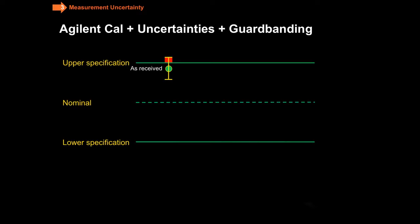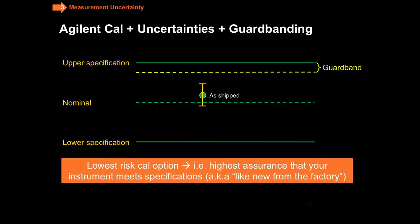Some of our customers tell us that they cannot afford risk. And so what we then do with guard banding is we take that same expanded measurement uncertainty and then we establish on the yellow dotted line a tighter acceptance limit. Then we readjust and what we end up with after adjusting is a measurement result like this.